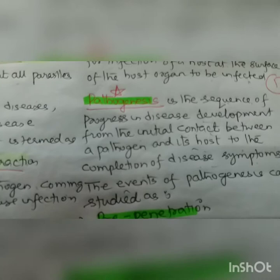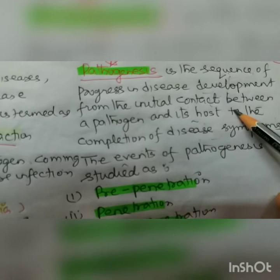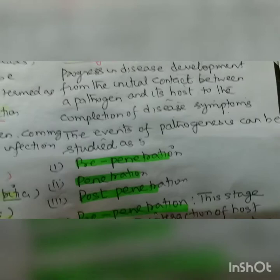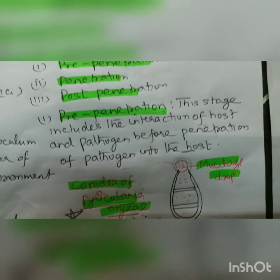Next is pathogenesis, an important topic that often comes as an essay question. It is basically a sequence of processes in disease development, from initial contact between the pathogen and the host to the completion of disease symptoms — from inoculum reaching the host to the appearance of symptoms like chlorosis and necrosis. Pathogenesis can be studied in three stages: pre-penetration, penetration, and post-penetration.